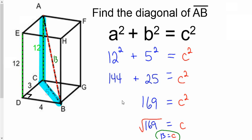So AB is measured as 13. So if they ask you to find the diagonal of a rectangular prism, most of the time it's going to be a two-step process where you've got to find two different missing hypotenuses.